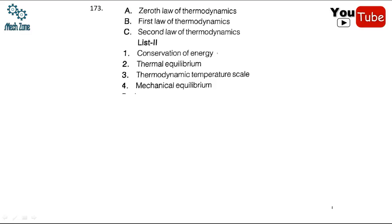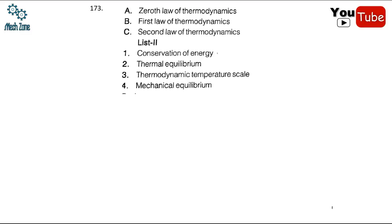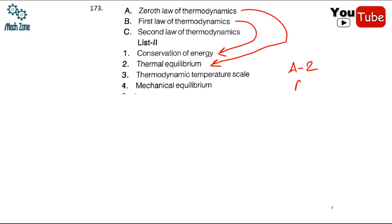Question 173 involves matching columns: the zeroth law of thermodynamics establishes thermal equilibrium (A→2), the first law of thermodynamics is about conservation of energy (B→1), and the second law of thermodynamics deals with entropy and the direction of processes.